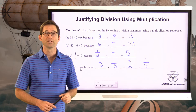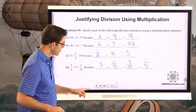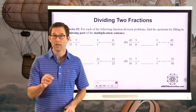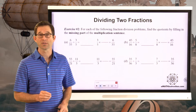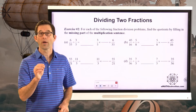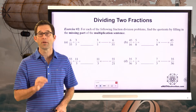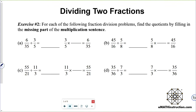Let's keep playing around with this and look at how we might be able to divide two fractions. Key to this is remembering what we saw in the last lesson with multiplying two fractions: when we multiply two fractions, we multiply the numerators — the tops — and we multiply the denominators — the bottoms. Now let's take a look at exercise number two.